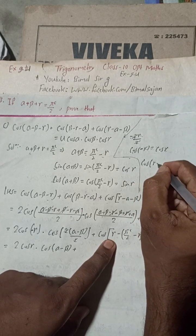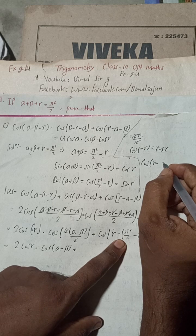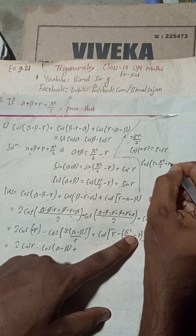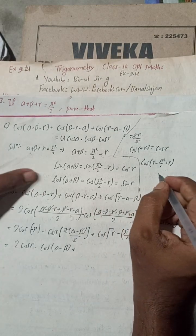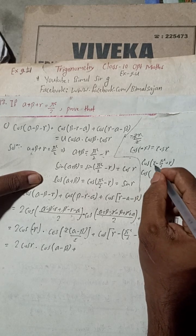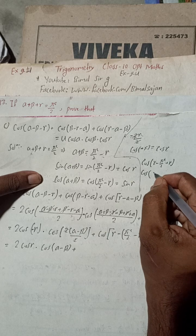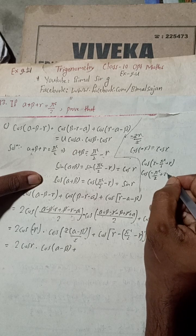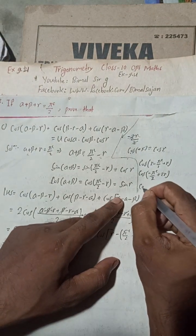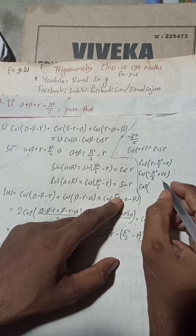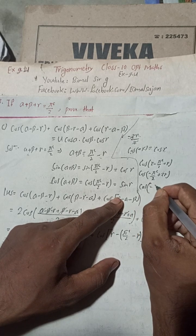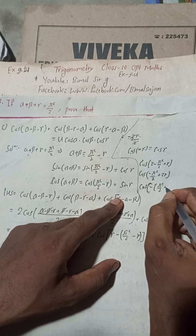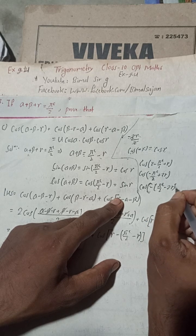Now solving this part: cos gamma minus, and this becomes pi/2 minus negative gamma, so minus and minus gives plus gamma. So we have cos(plus gamma plus gamma) which is 2 gamma. This gives minus pi/2 plus 2 gamma, and taking minus common this is written as minus(pi/2 minus 2 gamma).